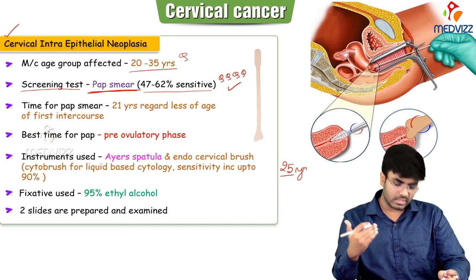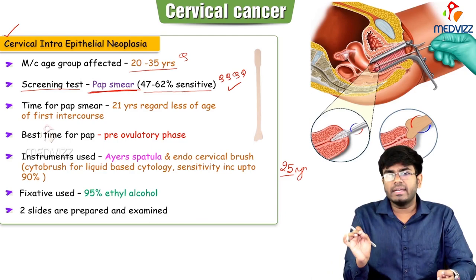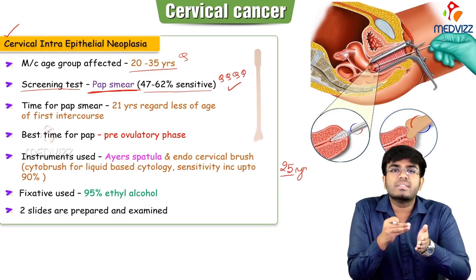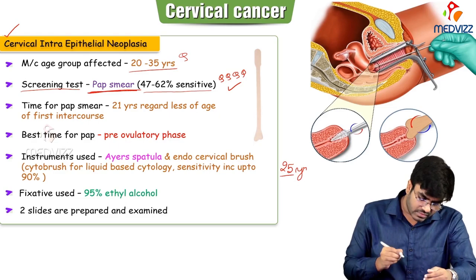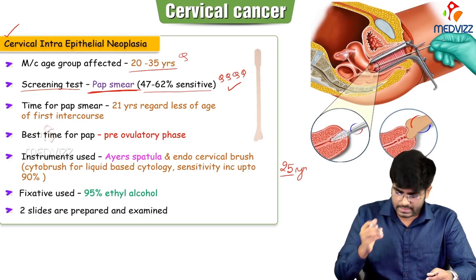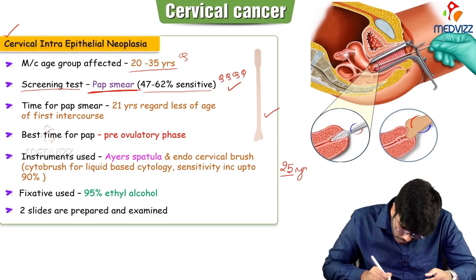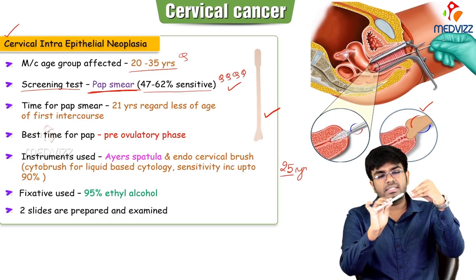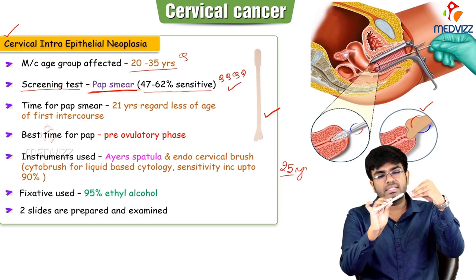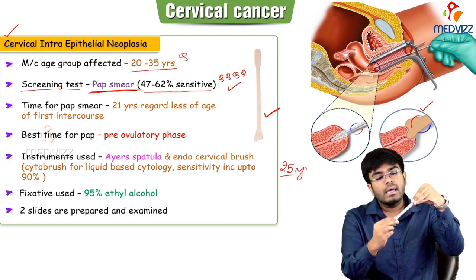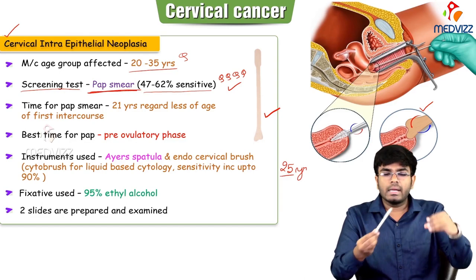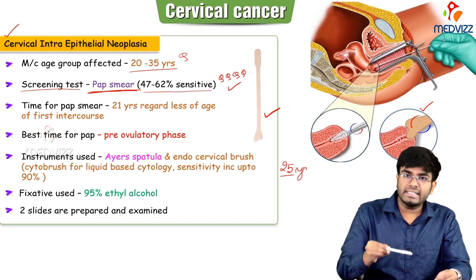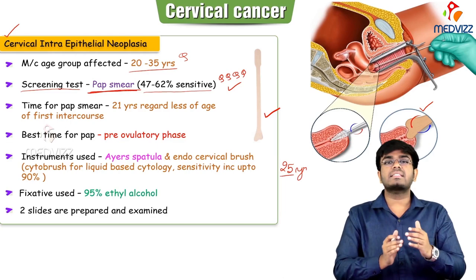In the Pap smear, we collect epithelial cells from the cervix, put them on a slide, fix them, and examine under the microscope for dysplastic changes. For collecting cervical epithelial cells, we use an instrument known as the Ayre's spatula. We collect especially from the transformation zone. Pap smear is a cytological study. The best time for performing the Pap smear is the pre-ovulatory phase.